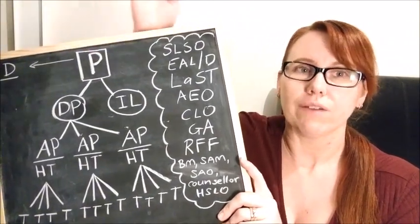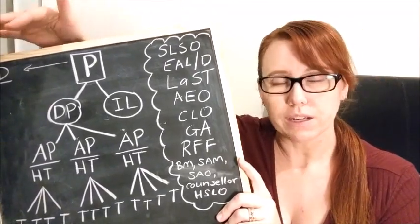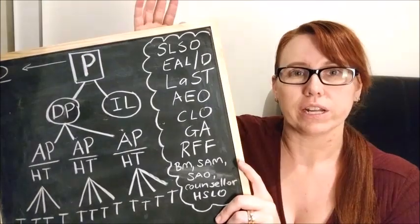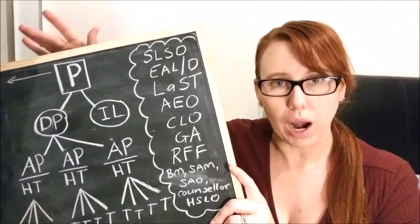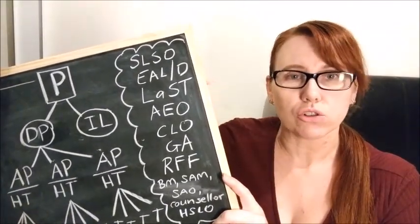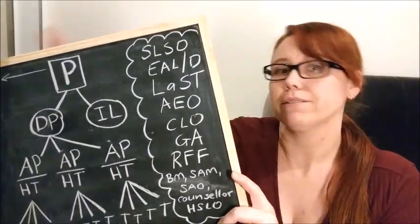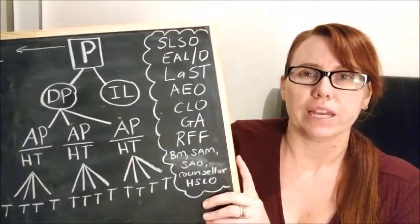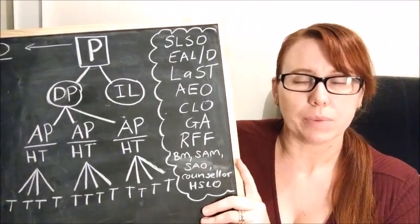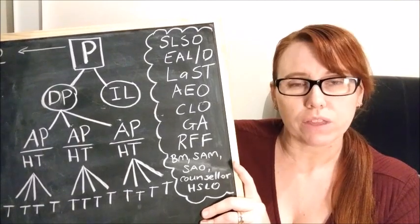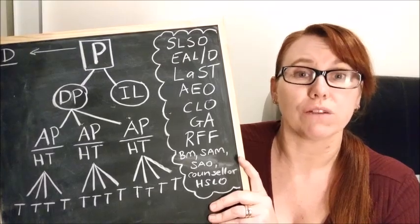Some schools that have two have an instructional leader for literacy and an instructional leader for numeracy. Other schools have gone a different way with an instructional leader for infants and primary. Some will just have one instructional leader K to three for literacy and numeracy. It needs to be based on student need. That's really what drives the instructional leader position, focusing on student results and making sure students aren't falling behind.